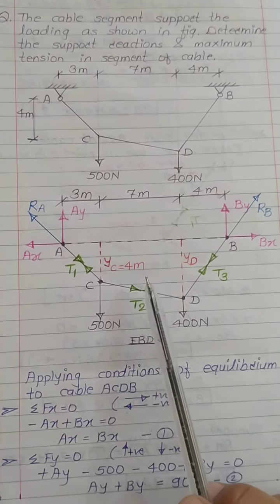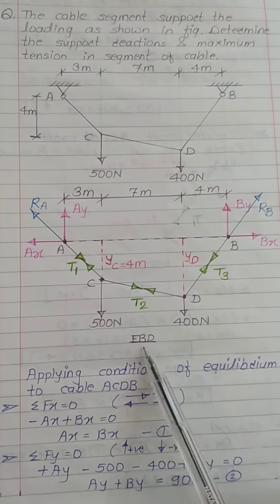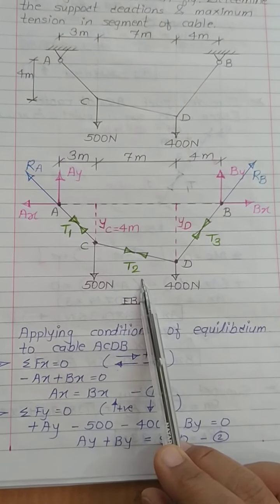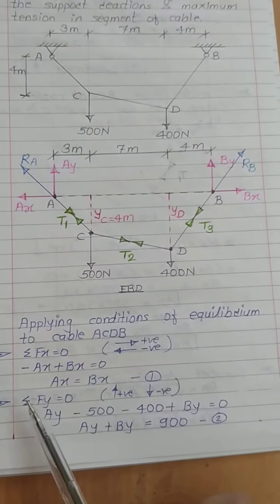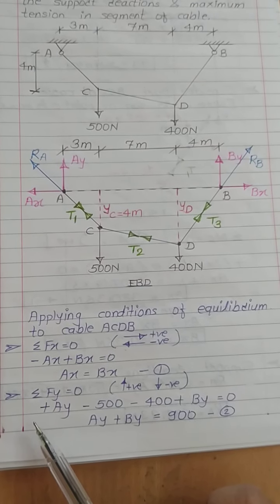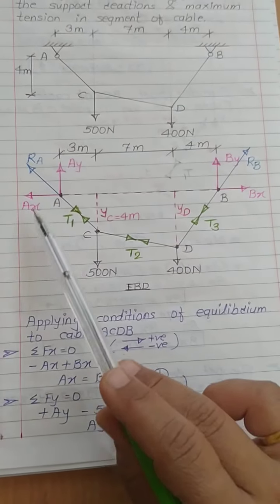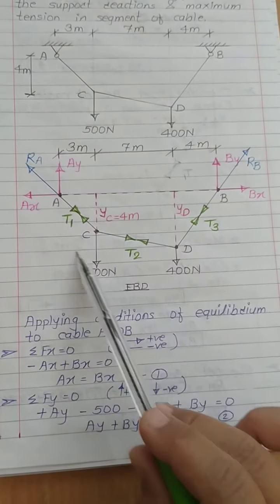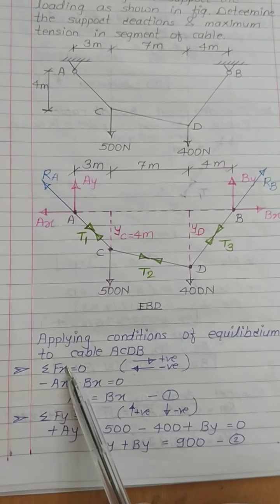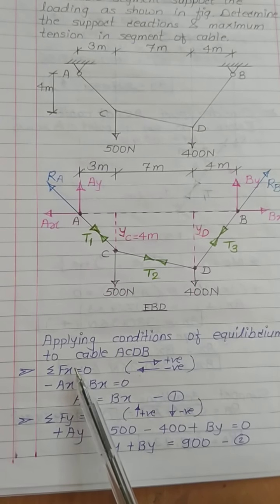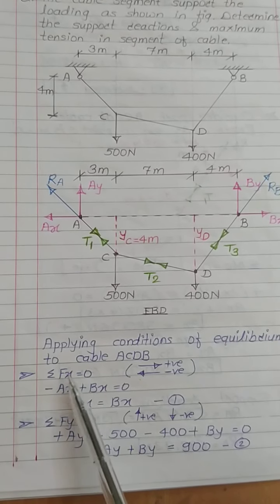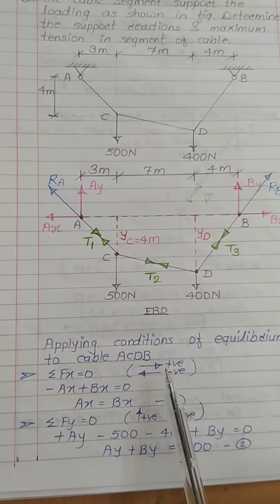After showing the active and reactive forces, we will solve this numerical. We have drawn the free body diagram; now we apply equilibrium conditions. Since this is a non-concurrent force system — all forces are not acting at one common point — we will use ΣFx = 0, ΣFy = 0, and ΣM = 0.